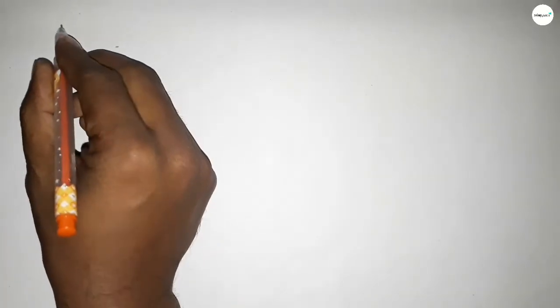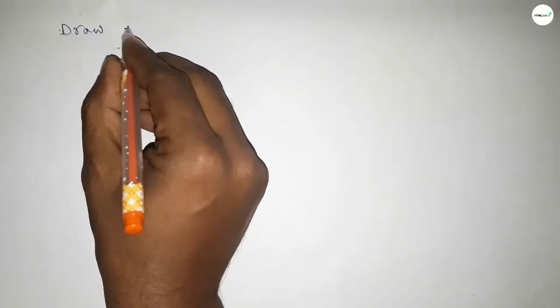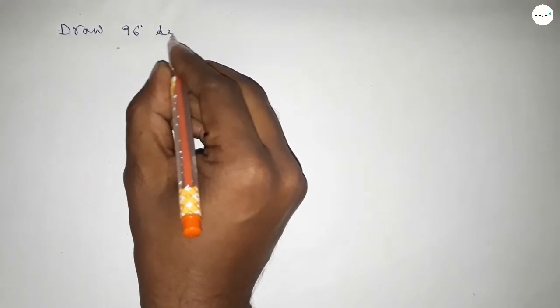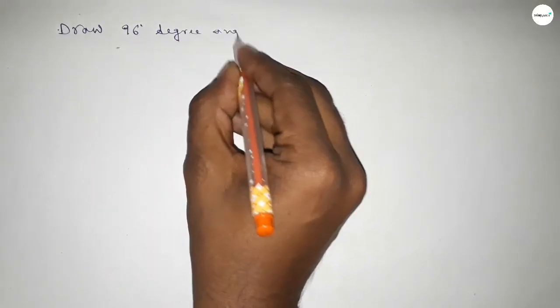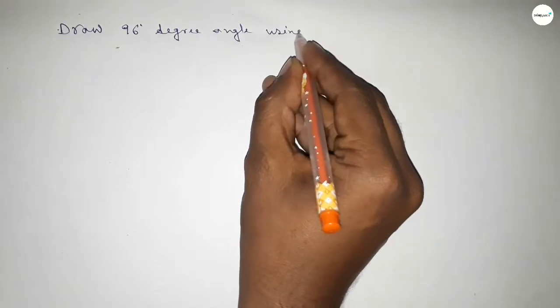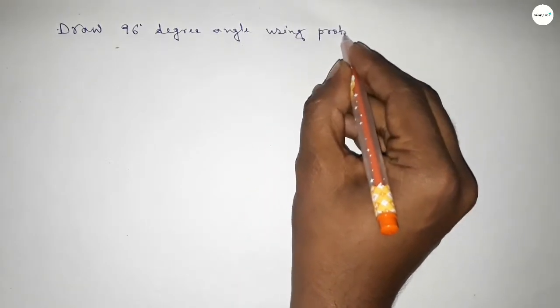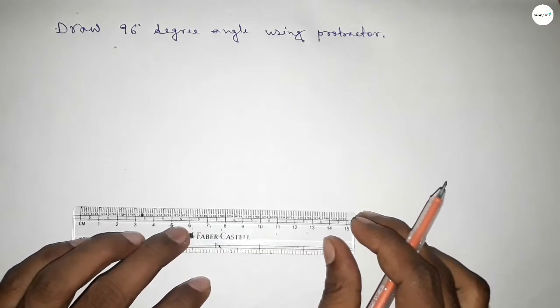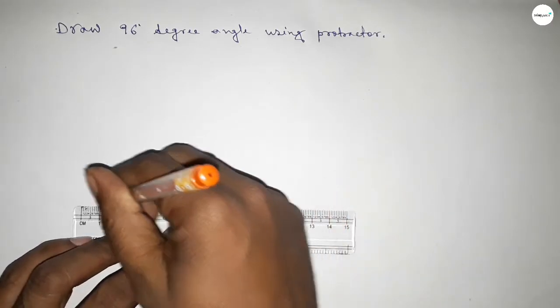Hi everyone, welcome to SSR Classes. Today in this video we have to draw a 96 degree angle by using a protractor. So constructing a 96 degree angle, let's start the video. First of all, we have to draw here a straight line of any length.